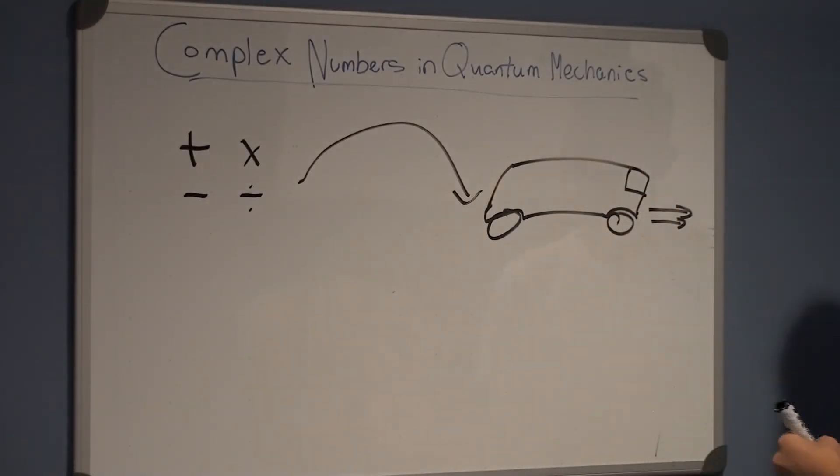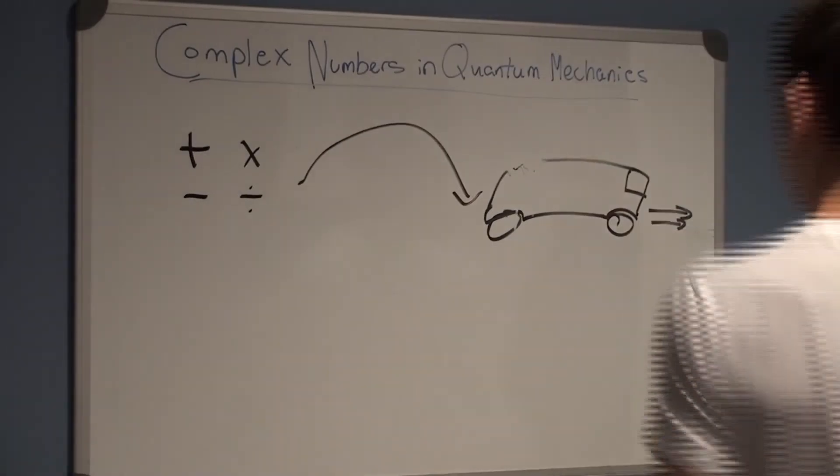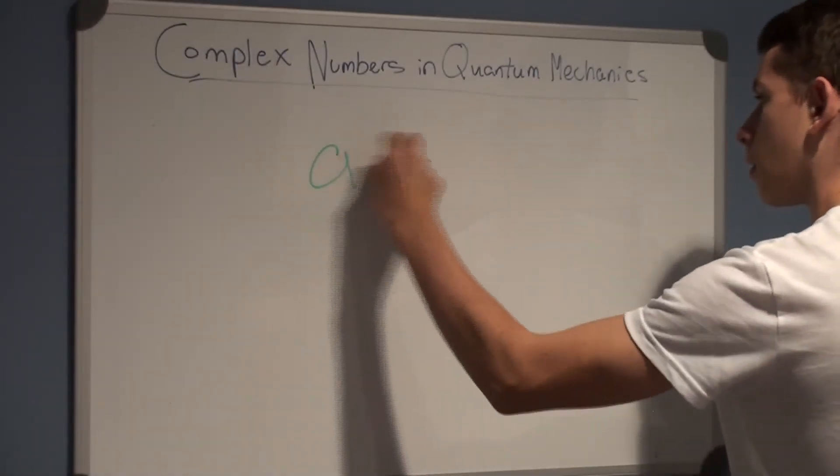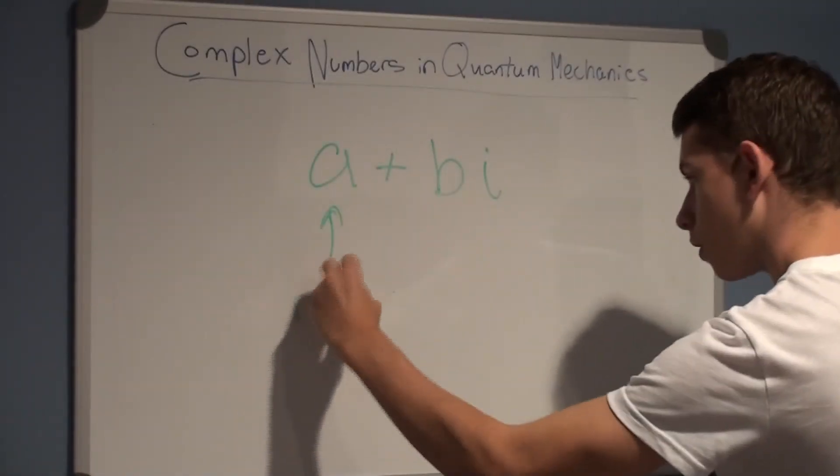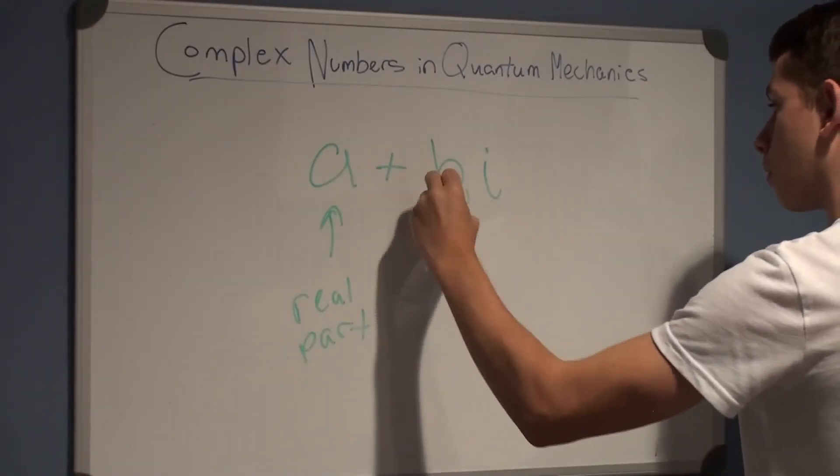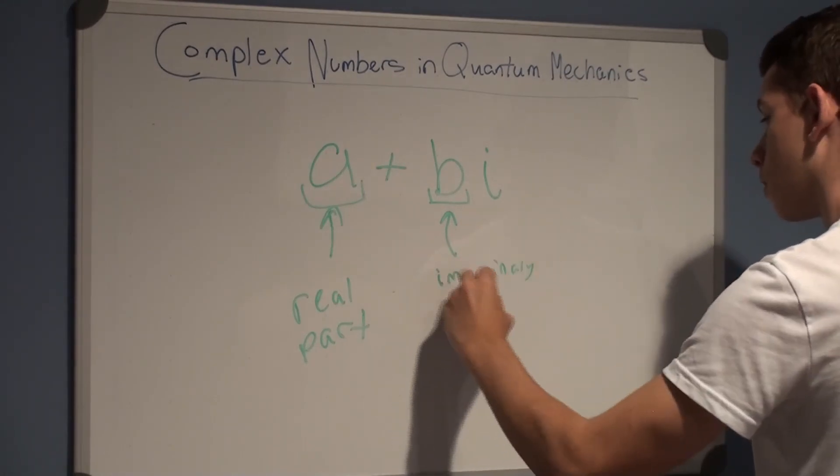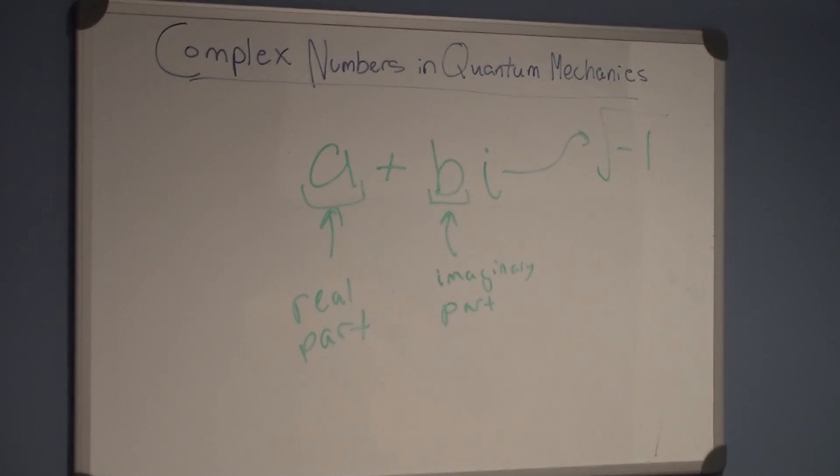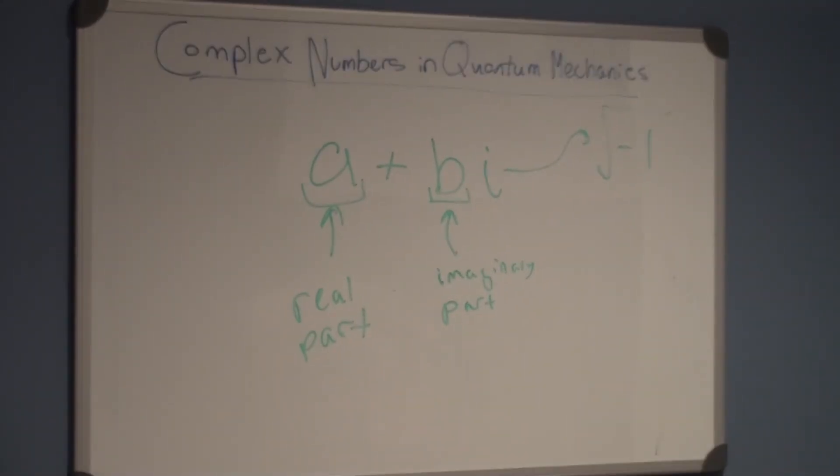My favorite example of this phenomenon is that of complex numbers and their almost universal application to quantum mechanics. Now, a complex number is defined as a plus bi, where a and b are just real numbers, and i, also known as the imaginary number, is defined as the square root of negative 1, a quantity that mathematicians will never truly know the value of.